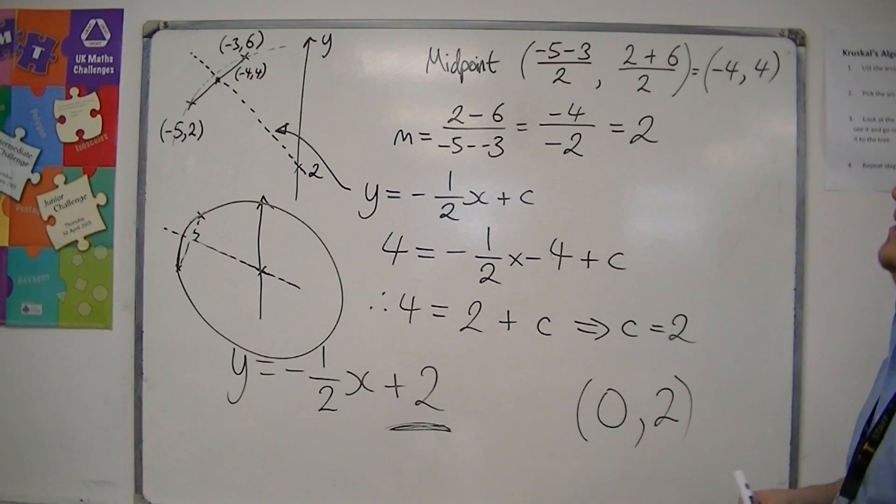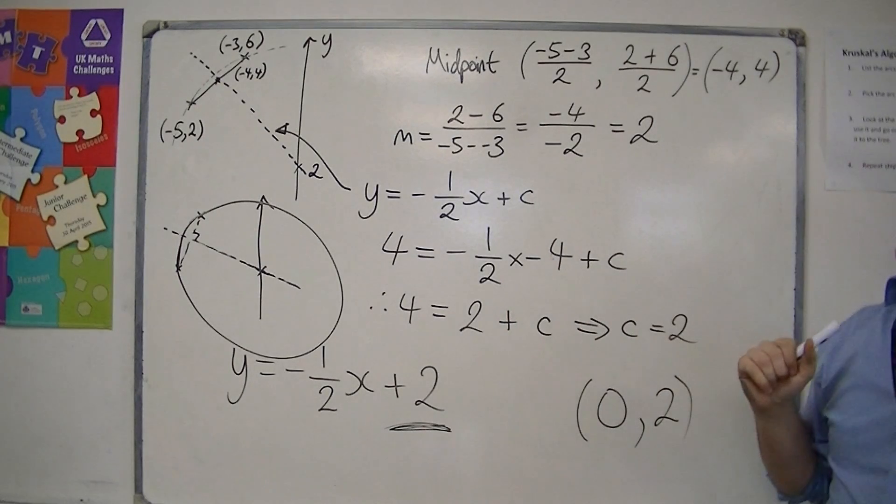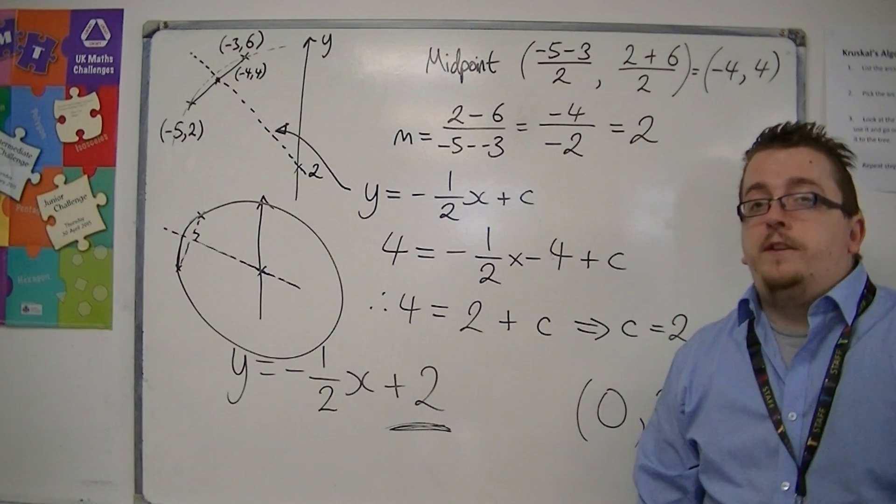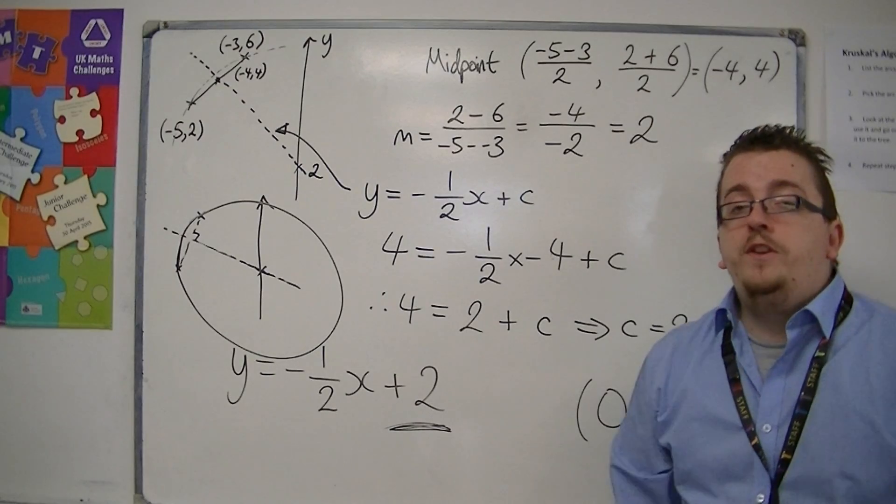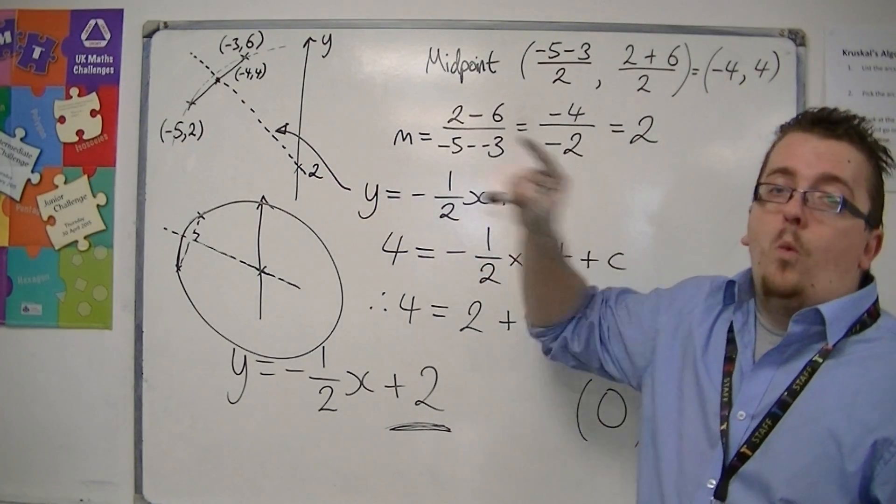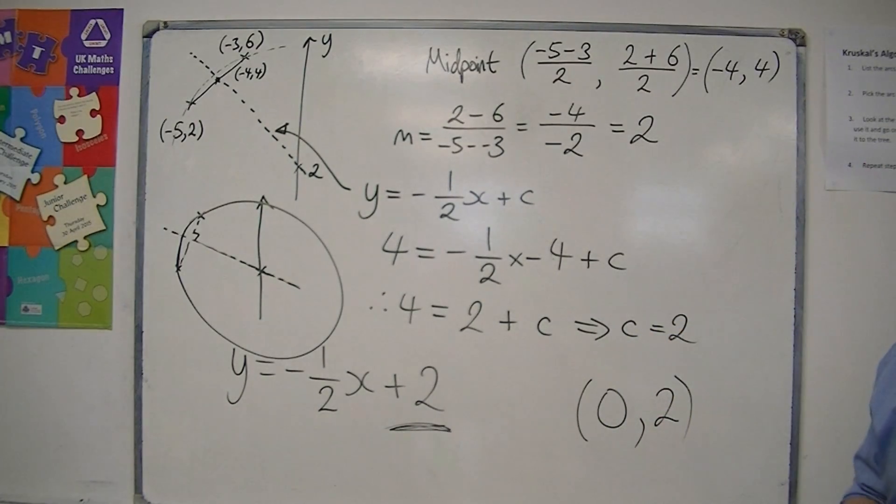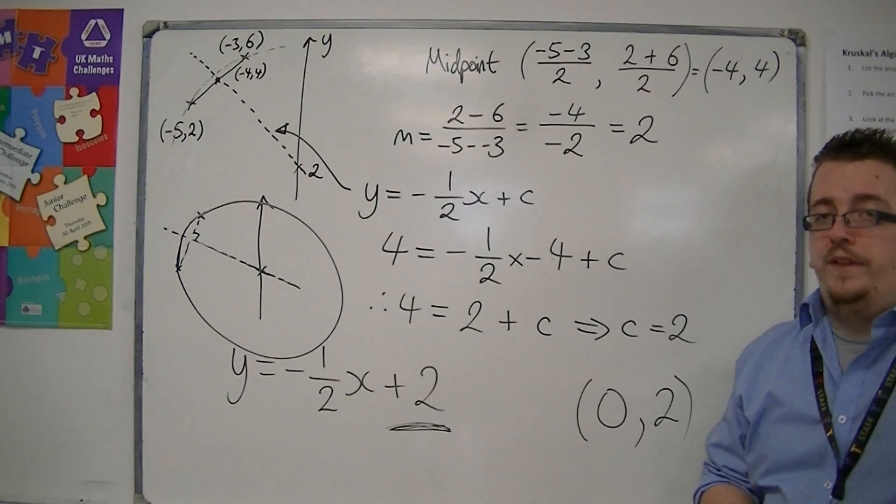And that's how we can use a chord to identify the coordinates of the centre of the circle. In the next video, in order to do that in general, if the centre of the circle wasn't on the y-axis, then we need another point. And that's what we're going to look at in the next video.